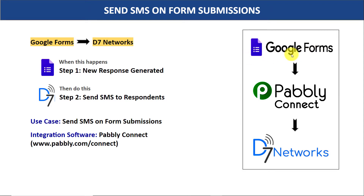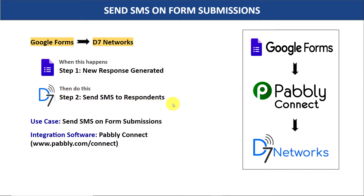Here you have two choices. The first choice is you copy all the details of John from Google Forms, sort it out, compose a message, and send it as an SMS. But this process is very repetitive and tiresome considering many people will be filling out your Google Forms. So I would suggest bringing in some automation so that whenever a new response is generated in Google Forms, it will automatically send SMS to your respondents.